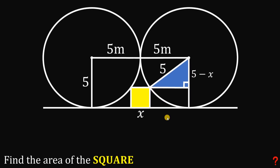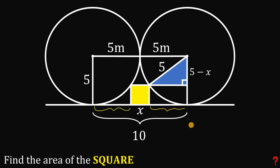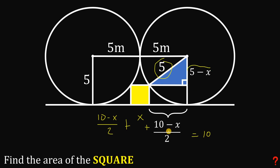To find the missing leg, focus on the rectangle: its total length is 10 meters. The side of the square is x, and by symmetry the two remaining segments on either side are equal. So each of those segments is (10 minus x) divided by 2. Adding (10 − x)/2 + x + (10 − x)/2 gives exactly 10, confirming the geometry. Therefore the three sides of the right triangle are: 5 (hypotenuse), 5 minus x, and (10 minus x) over 2.